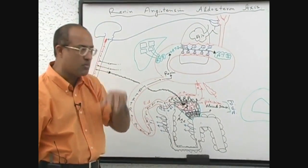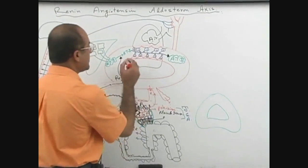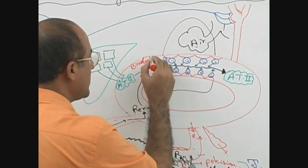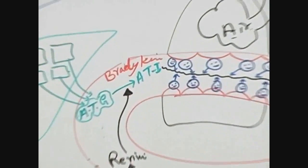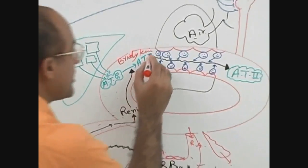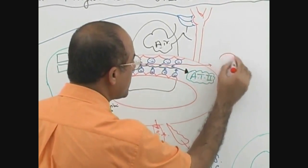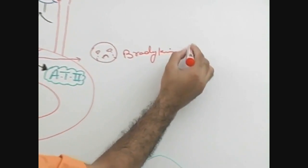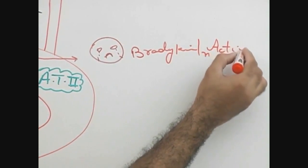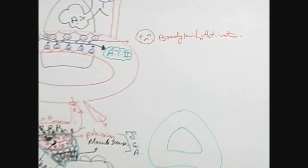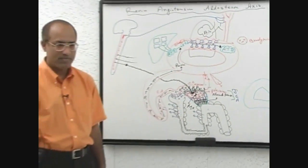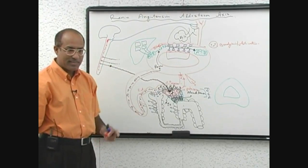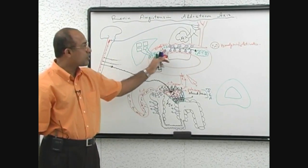Some good doctors know that ACE has a second function. There is another product in the blood called bradykinin. Bradykinin is broken down and inactivated by these enzymes. Bradykinin is a vasodilator, and angiotensin 2 is a vasoconstrictor. So the function of ACE is to break down vasodilators and produce a vasoconstrictor.